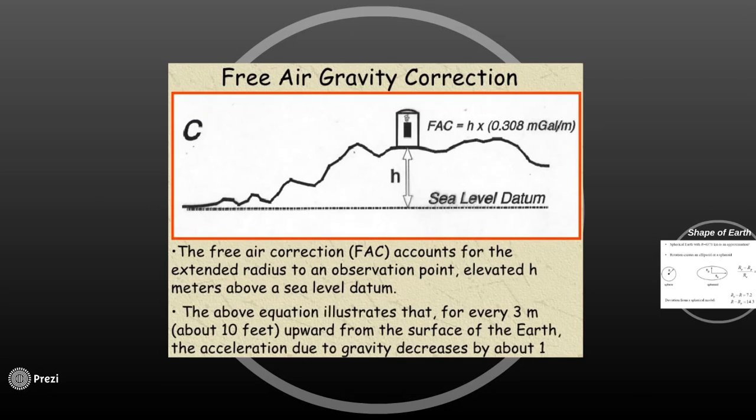The first method of gravity correction is the free air correction. The free air correction accounts for the extended radius to an observation point which is elevated to a certain distance h above sea level datum. We have to bring this measurement point to the sea level datum and we have to use the special formula which is shown on the picture. The free air correction is equal to the height times a certain value.